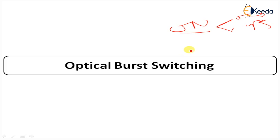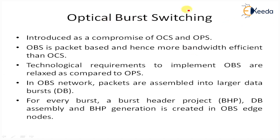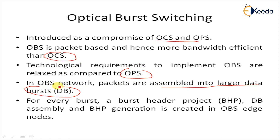OBS has several distinctive features compared to OCS and OPS. It was first introduced as a compromise between OCS and OPS. OBS is packet-based and hence more bandwidth efficient than optical circuit switching. The technological requirements to implement OBS are relaxed compared to OPS. In OBS, packets are assembled into larger units known as data bursts. For every burst, a burst header packet — known as a BHP — is generated.